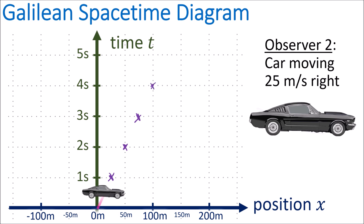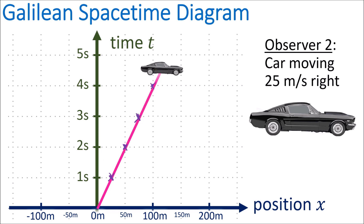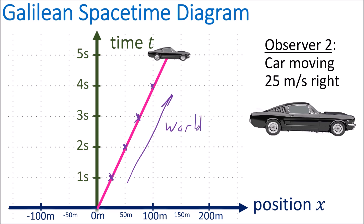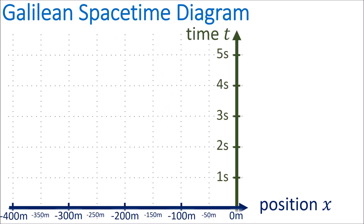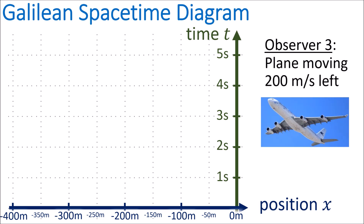So we can see that in a spacetime diagram, an object traveling to the right is represented by a diagonal world line pointing to the upper right. Now in our last example, observer number three, a plane is moving at 200 meters per second to the left. This time I've given myself more room on the left of the spacetime diagram to show the plane's world line.